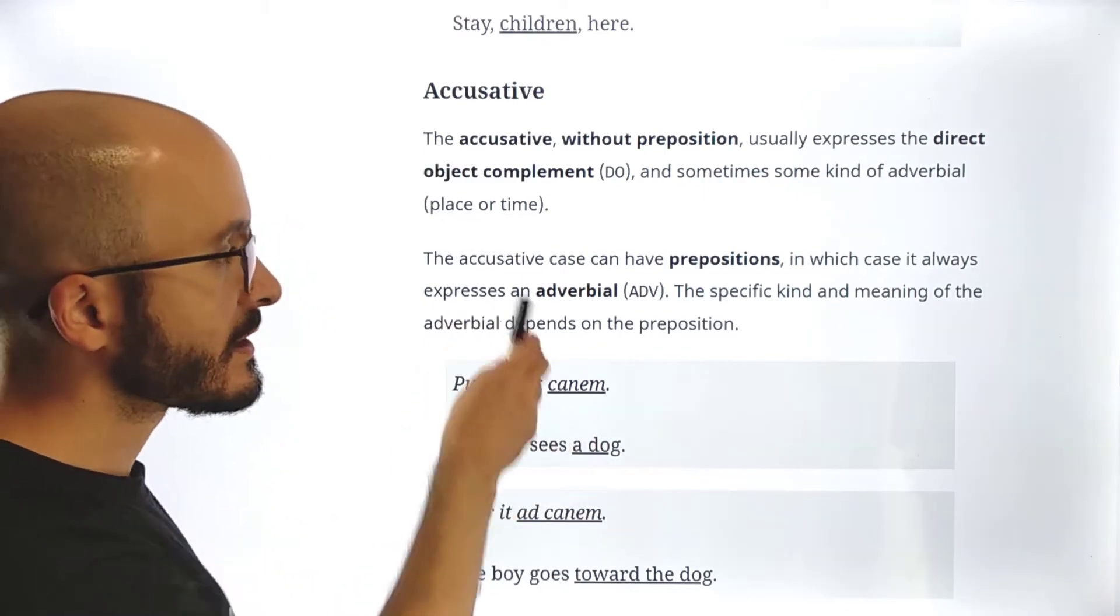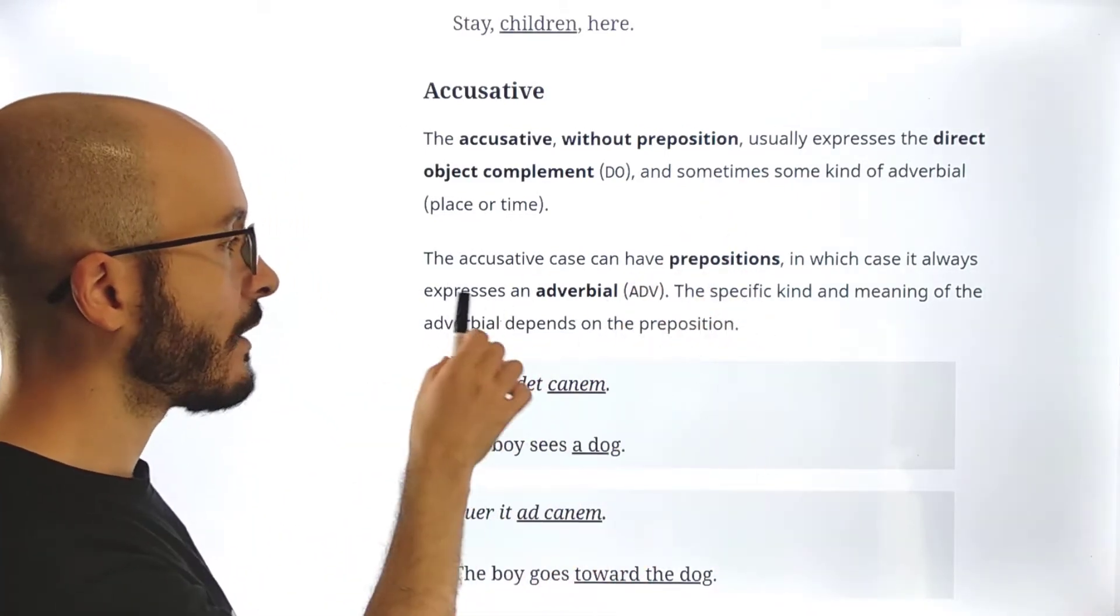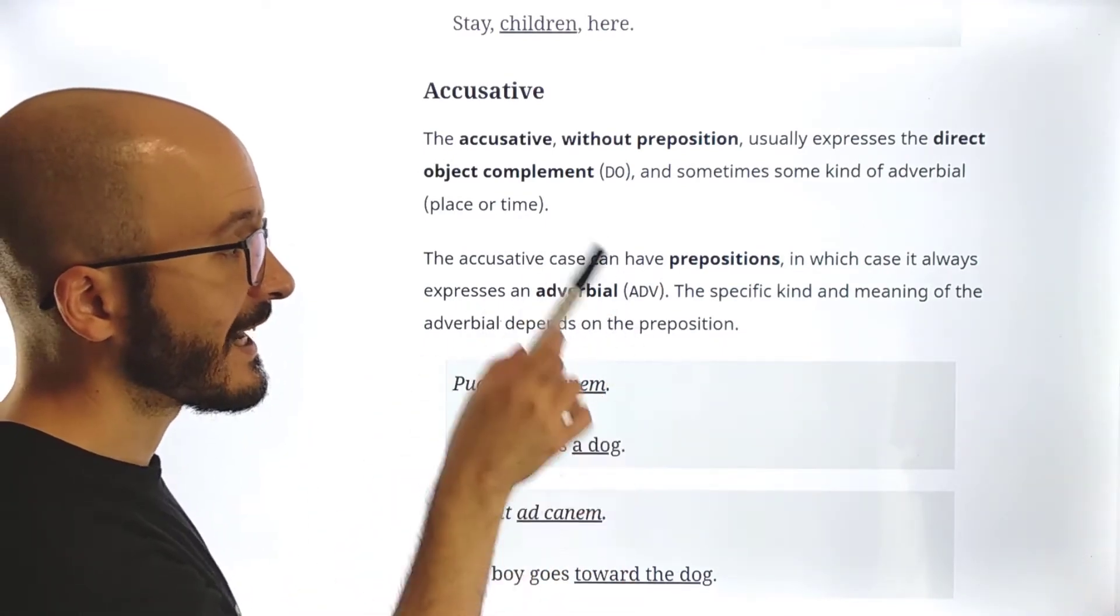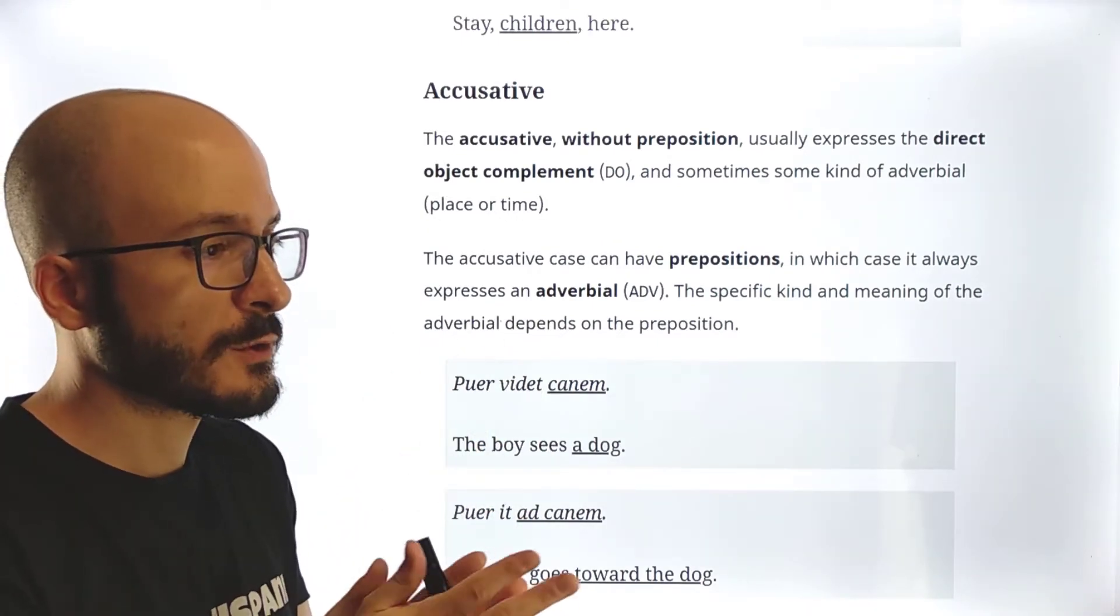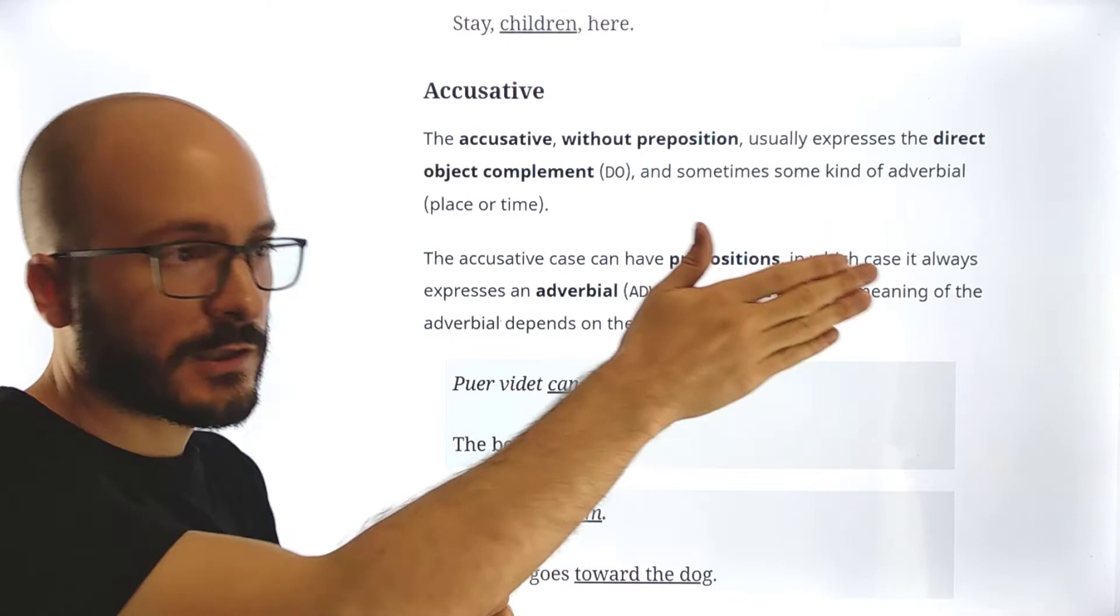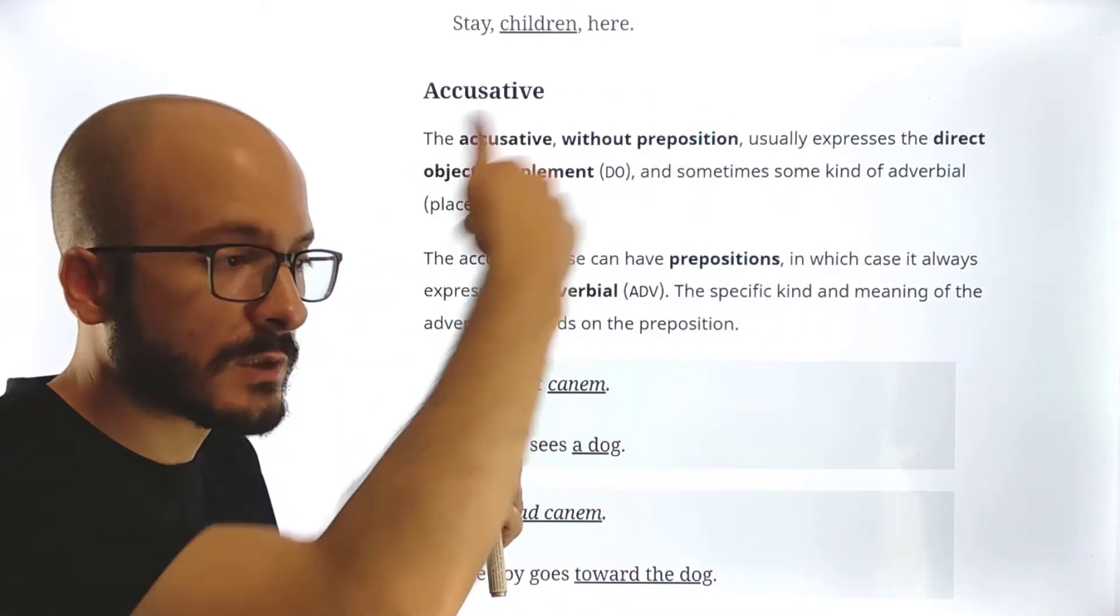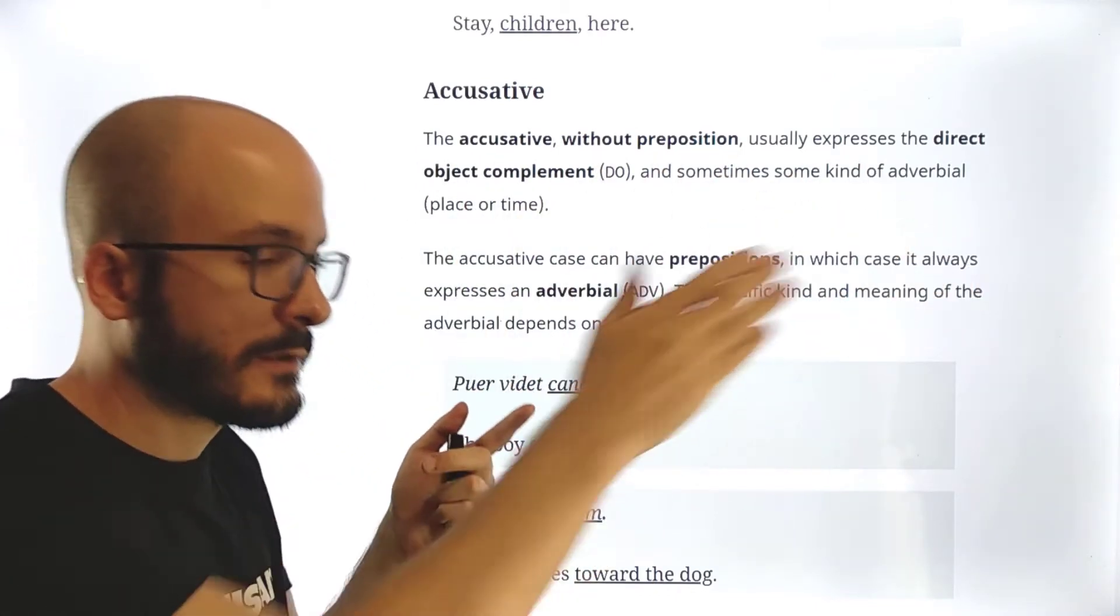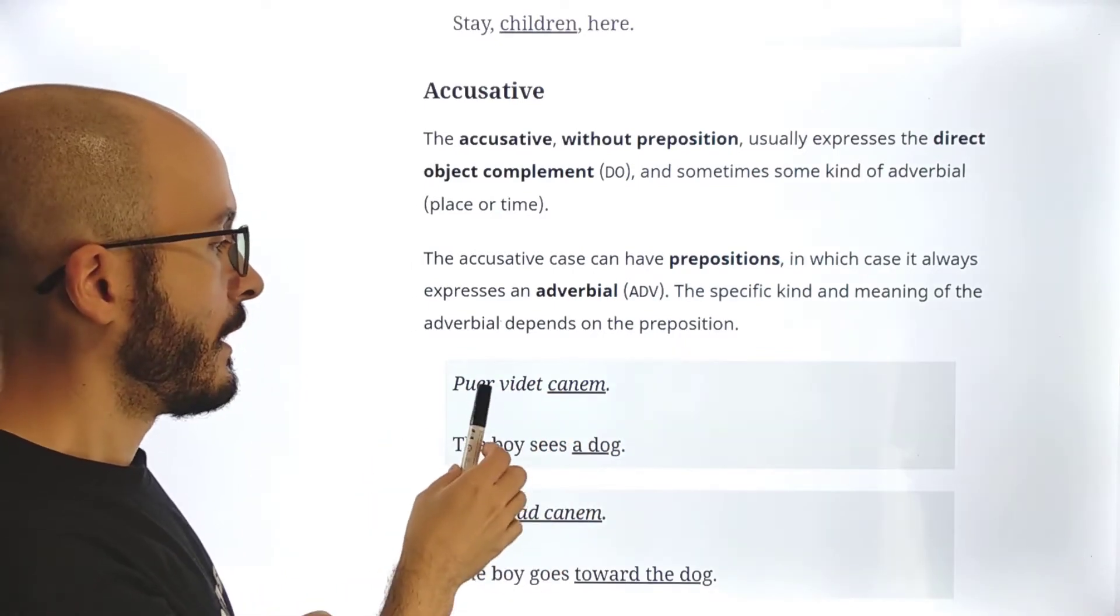Then the accusative can also have prepositions. And in that case, it always expresses some kind of adverbial. The specific kind and meaning of the adverbial depends on the preposition. So for example, if there is a preposition which means direction, so that, for example, I go to Spain. So that to Spain would be with a preposition which means direction, and Spain in the accusative.